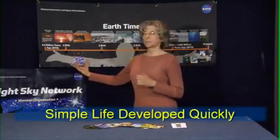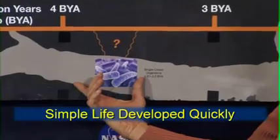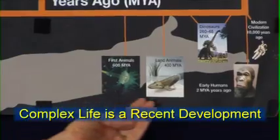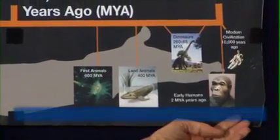You can read about many more in the activity write-up. The big ideas presented here are: simple life developed quickly after the Earth formed, and complex life is a much more recent development. These two facts lead us to the bigger astrobiology question of what types of life are we more likely to find on other planets? Let's take a closer look.